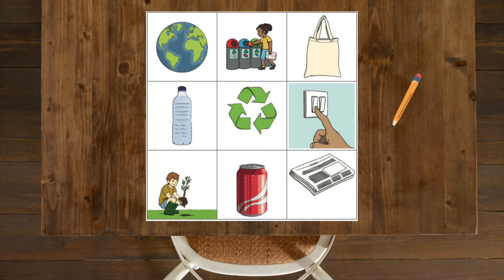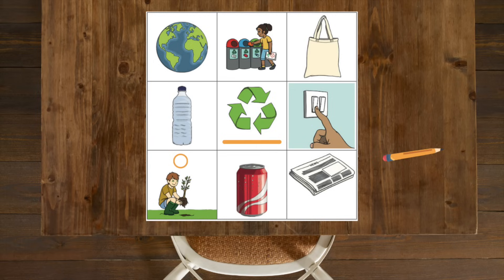Draw a line under the recycling symbol. Draw a circle above the boy planting a tree. Draw a line through the plastic bottle.